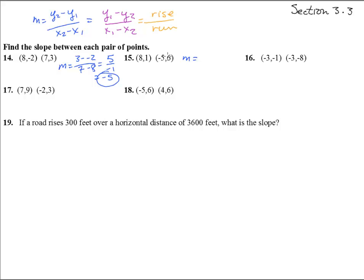Number 15. The slope is 6 minus 1 over negative 5 minus 8. And that is 6 minus 1 is 5 over a negative 13. Negative 5 thirteenths.